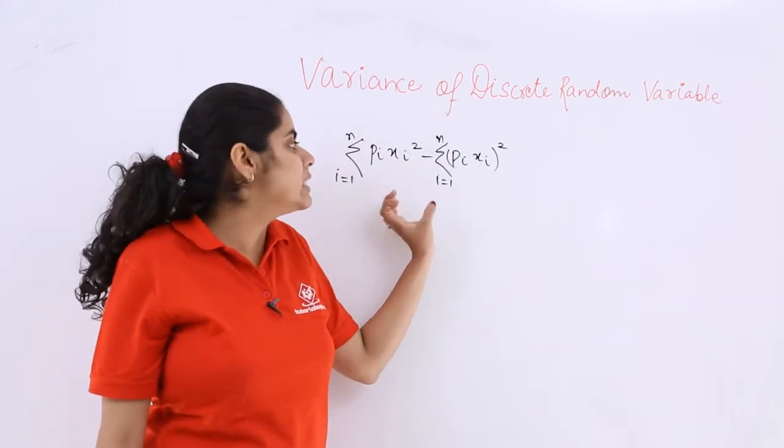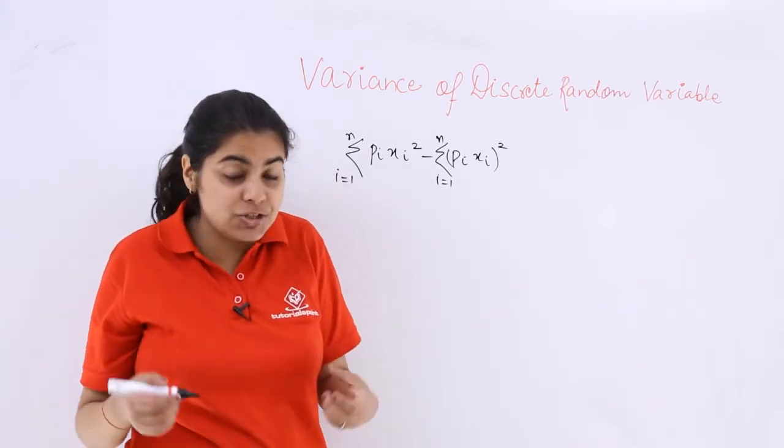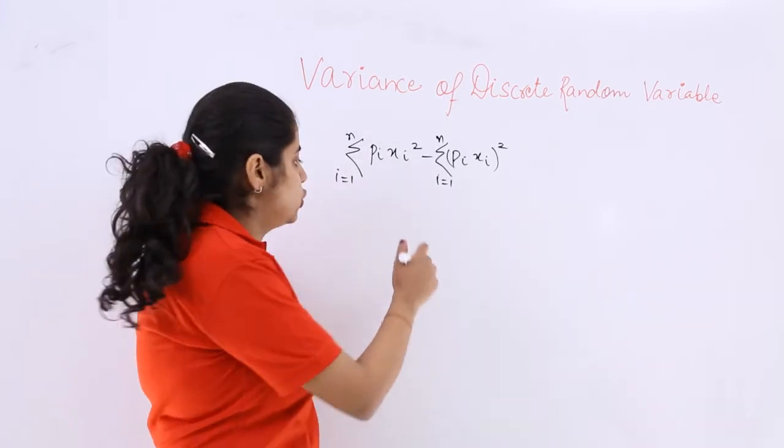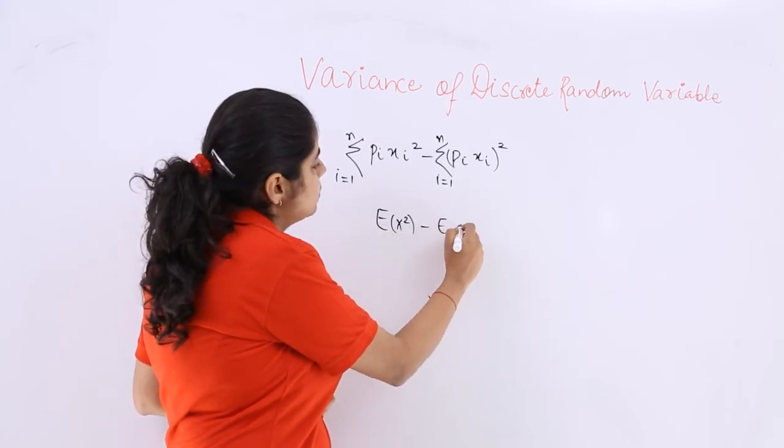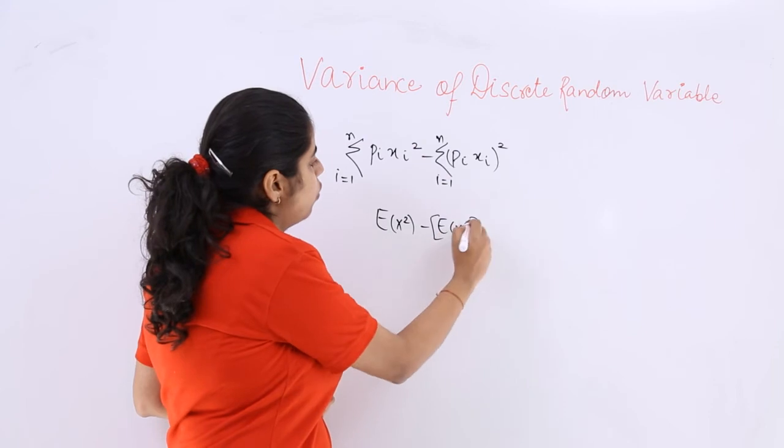Now if you don't want to write it in the form of pi and xi, and you're interested in writing in the form of expectation, it should be E(X²) minus [E(X)]².